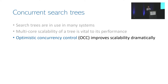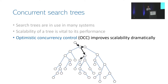In modern multi-core platforms, a key property that affects the performance of a tree is its scalability. The most scalable trees today are based on optimistic concurrency control. In a tree that supports optimistic concurrency control, traversals are read-only and do not perform any synchronization at all, such as acquiring locks or executing read-modify-write atomic instructions.